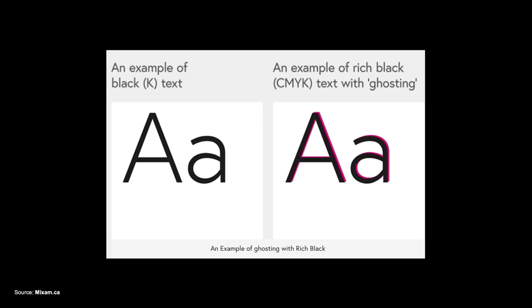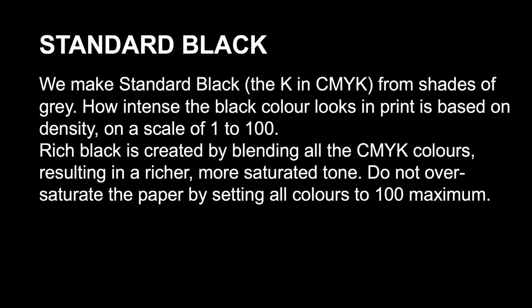The next slide shows an example of rich black causing ghosting drama — the magenta skipped from registering exactly on top of each other. Check your publications for rich black and remove it, using standard black instead. Standard black is simply K at 100%. For a grayscale, you can go 90, 80, 70 percent and so on, down to one — just adjusting the K parameter, not the full spectrum of CMYK.